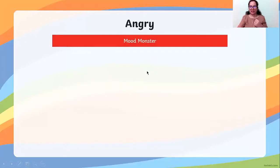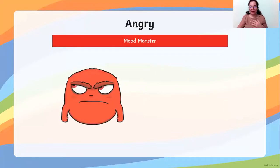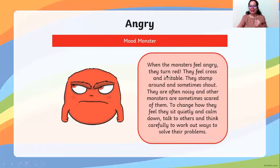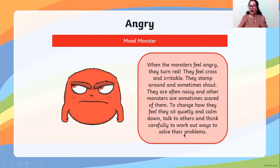Angry — when the monsters feel angry, they turn red. They feel cross and irritable; they stamp around and sometimes shout. When the monsters are angry, they are noisy and other monsters are sometimes scared of them. To change how they feel, they sit quietly and calm down, talk to others, and think carefully to work out ways to solve their problems. If you are angry, sit down, be alone, and calm yourself — do not shout or be angry at someone.